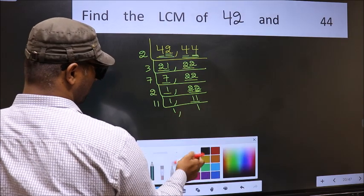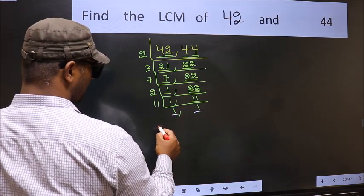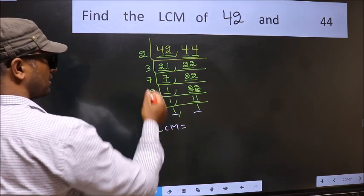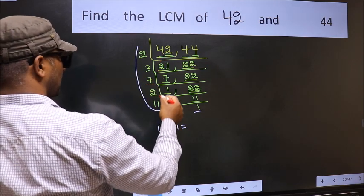So we got 1 in both the places. So our LCM is the product of these numbers.